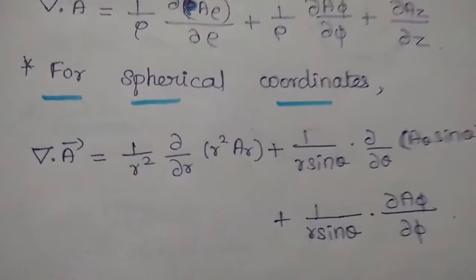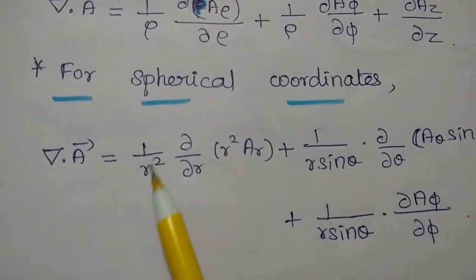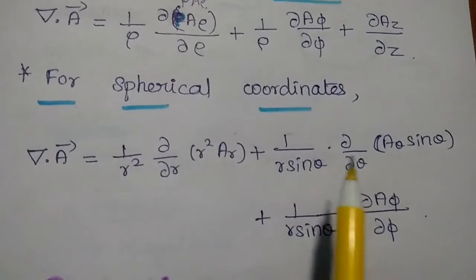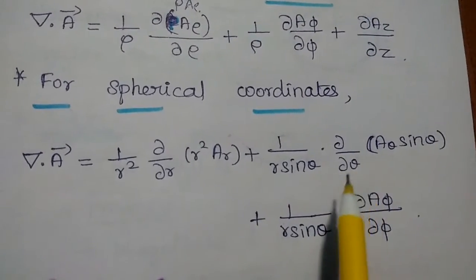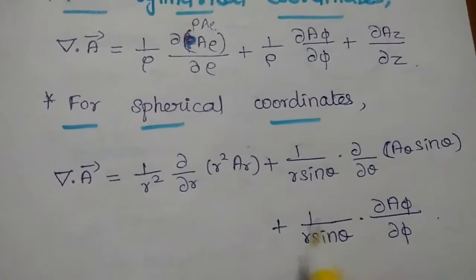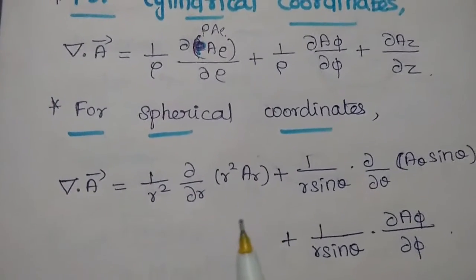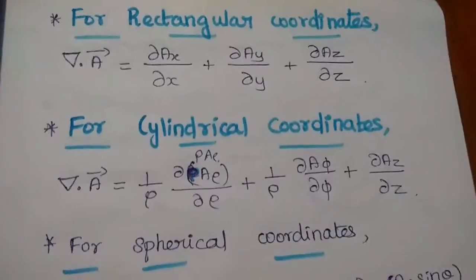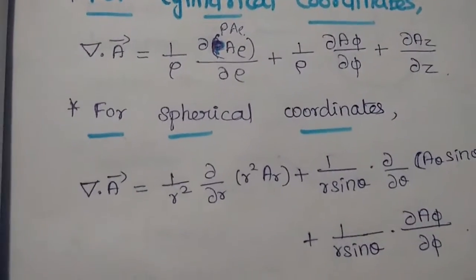Likewise, we also have the divergence formula for spherical coordinates. Del dot A vector is equal to (1/R²) ∂(R²·Ar)/∂R + (1/(R sinθ)) ∂(Aθ sinθ)/∂θ + (1/(R sinθ)) ∂Aφ/∂φ. The derivation for each coordinate system is a separate part — you just need to remember these formulas to solve problems. These three divergence formulas are very important to solve problems in electromagnetics.